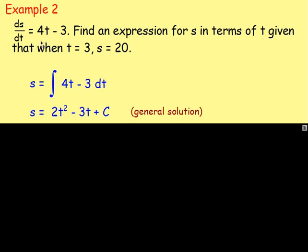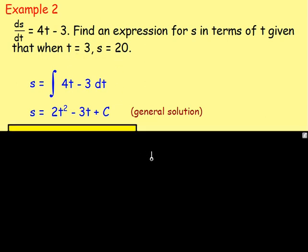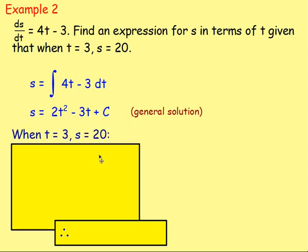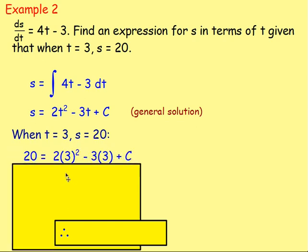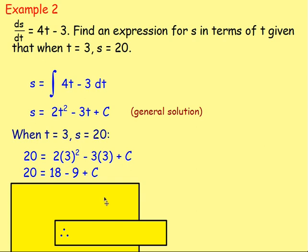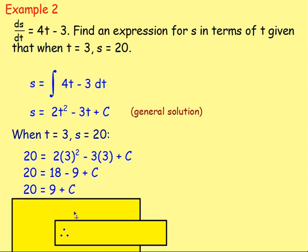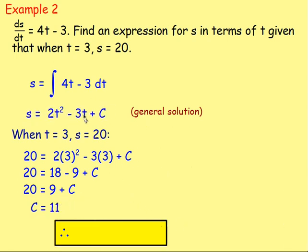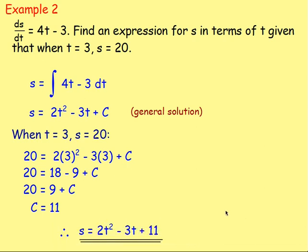Again, look at the additional information. We're told that when t is 3, s is 20. So you can replace s with 20 and t with 3. Doing that, we get 20 equals 2 times 3 squared minus 3 times 3 plus c. Work that out: 20 equals 18 minus 9 plus c, meaning 20 equals 9 plus c, so the value of c is 11. Rewrite the general solution replacing c with 11 — that is your particular solution.